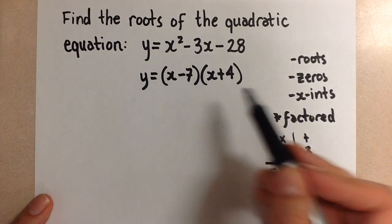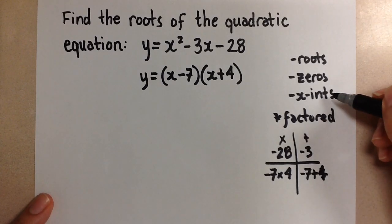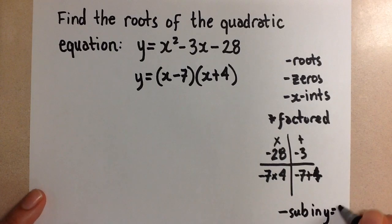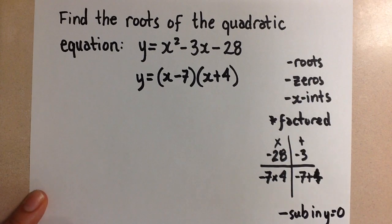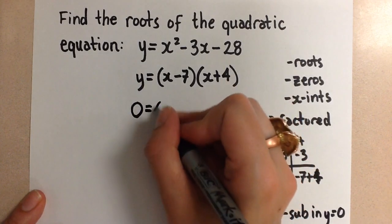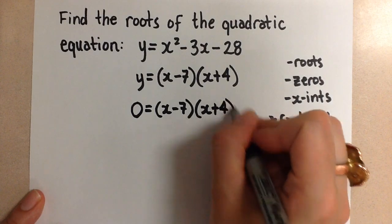So now from here we can get the roots for this. Remember, because we're really finding the x-intercepts, to find the x-intercepts we always sub in y equals 0. So if we do that, we're going to get 0 equals x minus 7 times x plus 4.